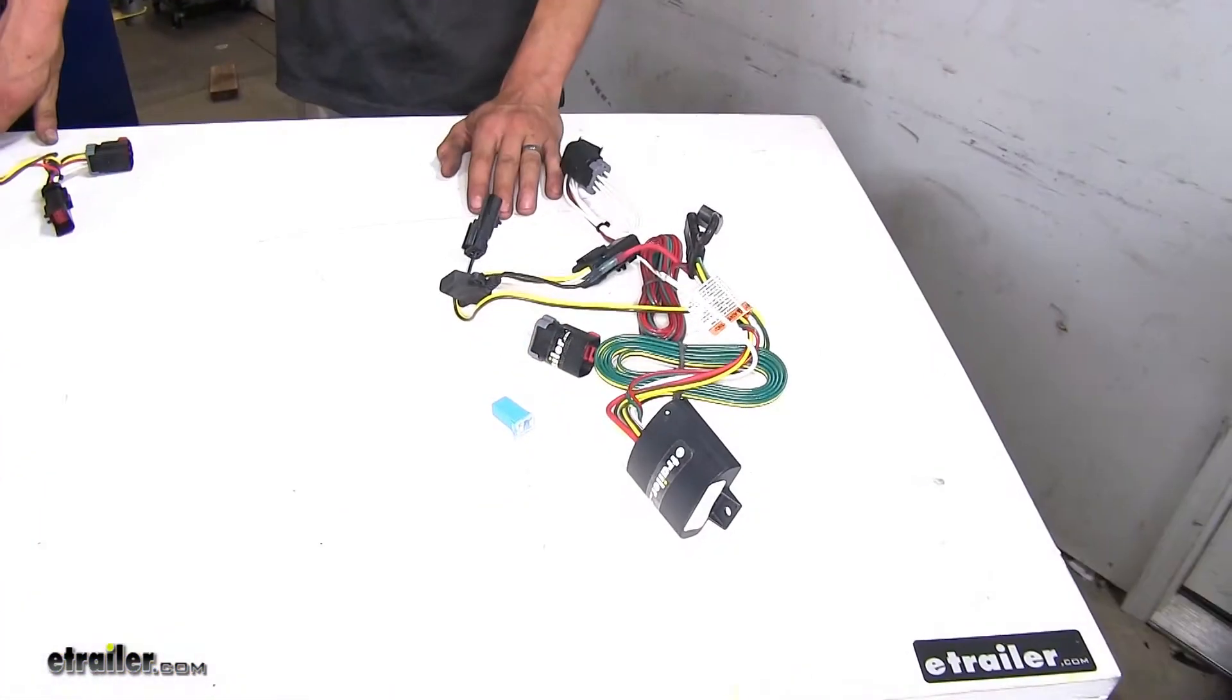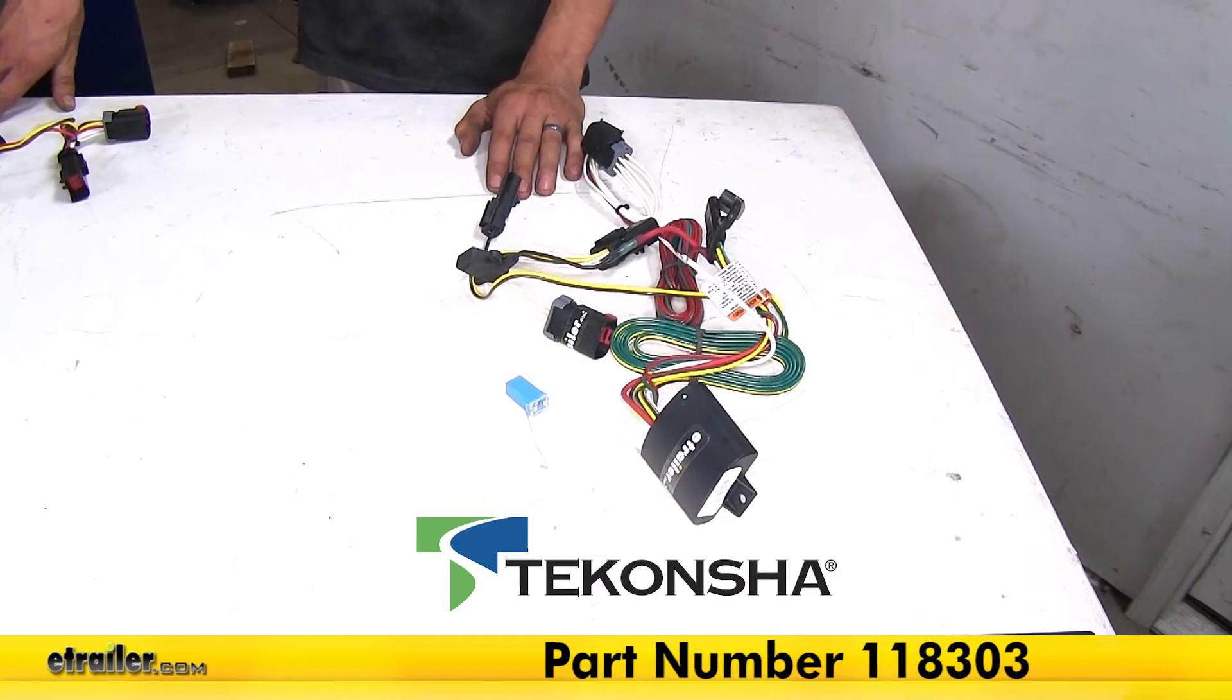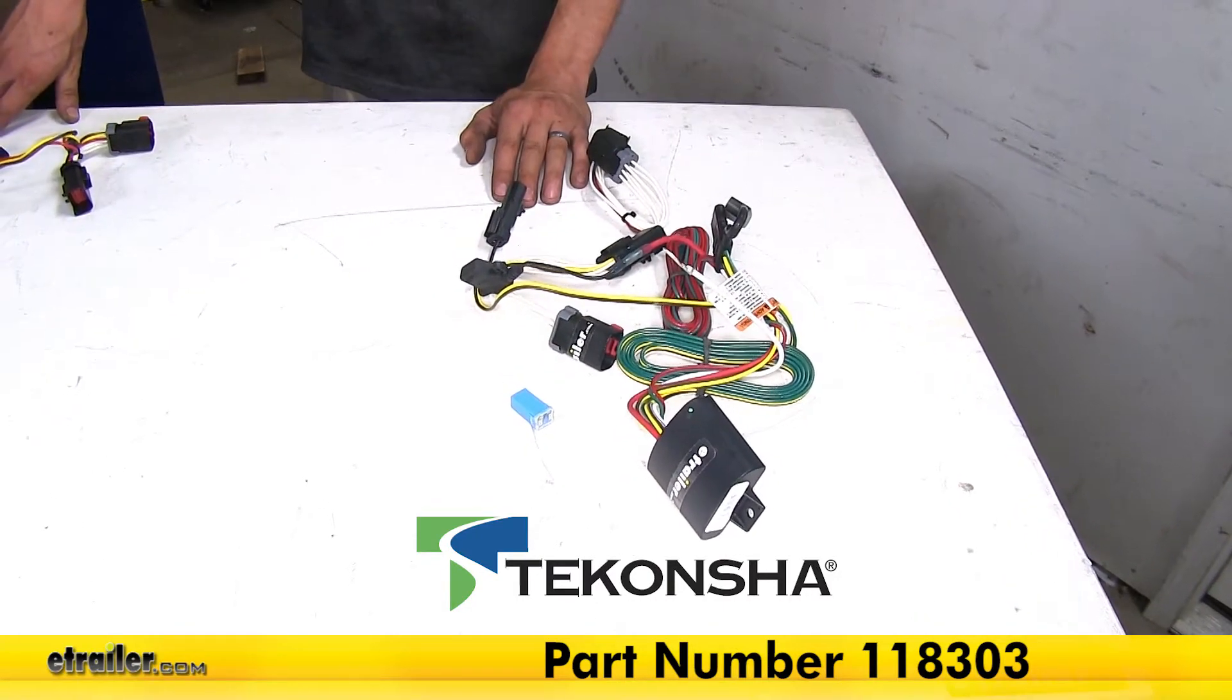And to my left, we have the Takansha T-1 Vehicle Wiring Harness, part number 118-303.